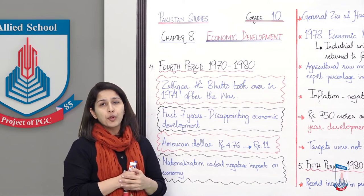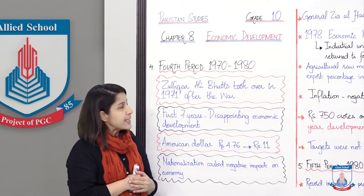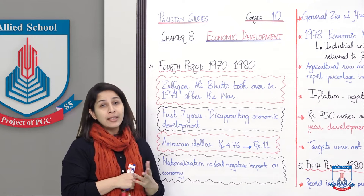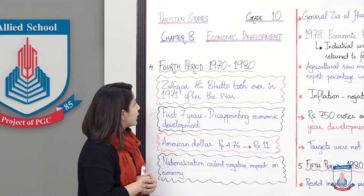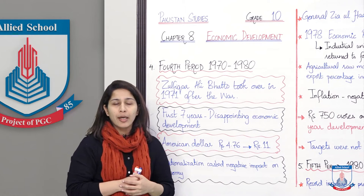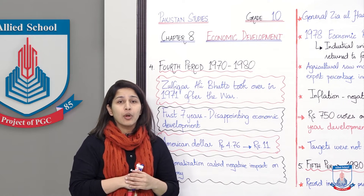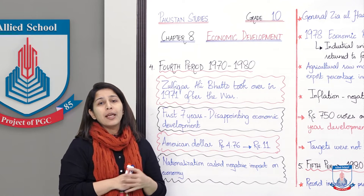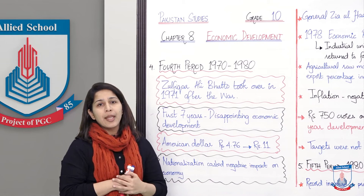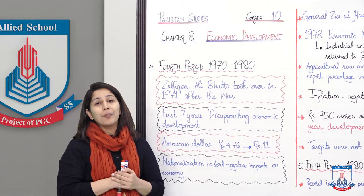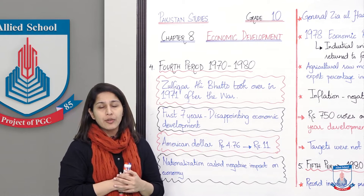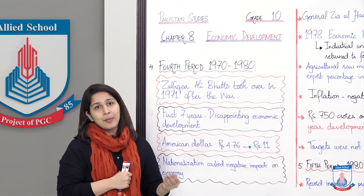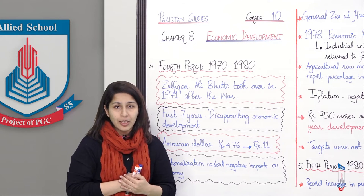Now let's start with the fourth period, which was from 1970 to 1980. As the year suggests, political change had come again — Zulfikar Ali Bhutto took over in 1971 after the 1971 war, which resulted in the emergence of Bangladesh. So East Pakistan and West Pakistan were separated, and a lot had been spent on defense.